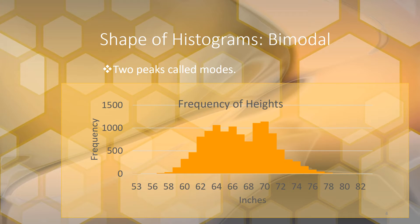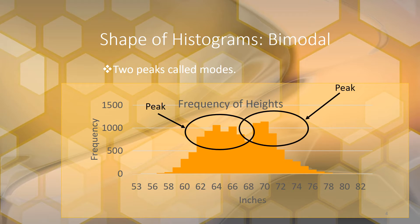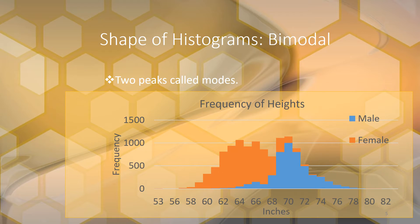Bimodal means that there are two peaks called modes. 'Bi' means two and 'modal' means peak. Here's our first peak and here's our second peak — it's just where the histogram has two high points. So this histogram of heights would be bimodal.